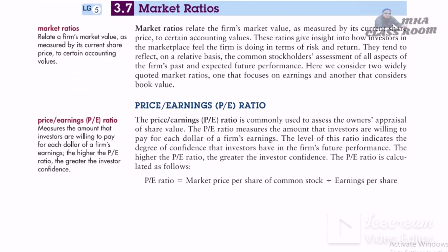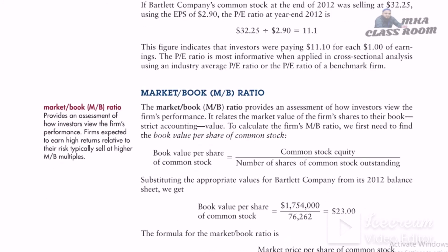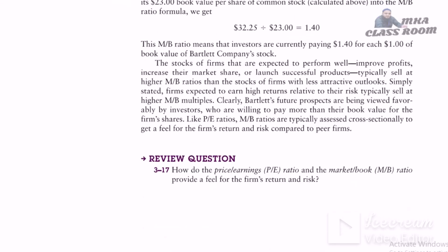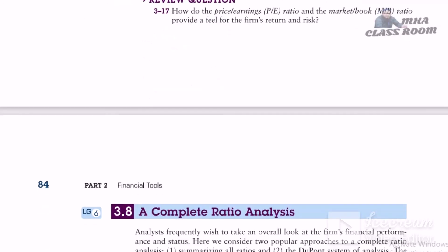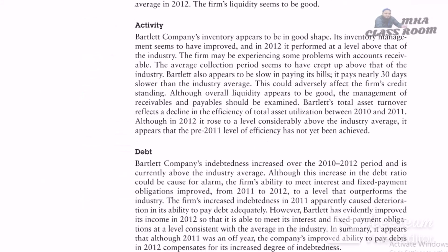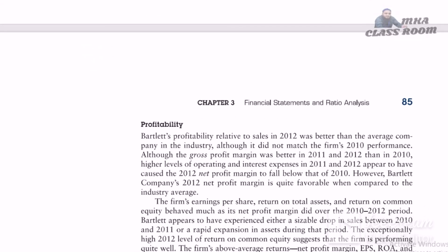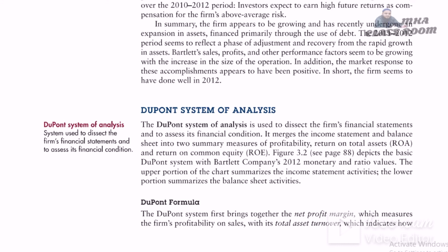Market ratios include: the price-earnings ratio (market price per share of common stock divided by earnings per share); and the market-to-book ratio (market value per share of common stock divided by book value per share). These are the total ratios used for calculating and judging a firm's financial position, summarized across five categories: liquidity, activity, debt, profitability, and market ratios.